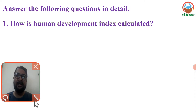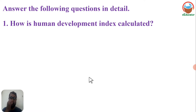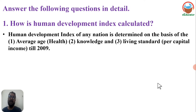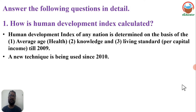How is the Human Development Index calculated? The Human Development Index of any nation is determined on the basis of certain criteria. Till 2009, average age, health, knowledge, and living standards including per capita income were considered. After 2009, a new technique has been used since 2010.